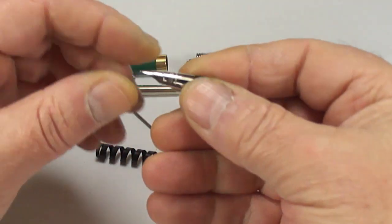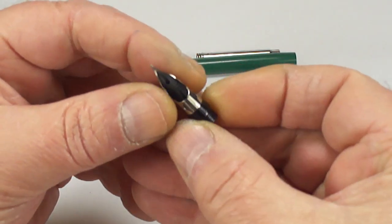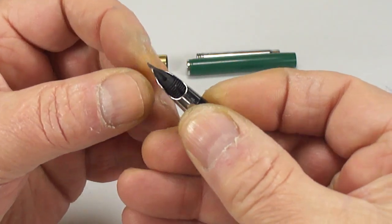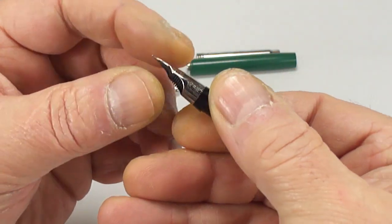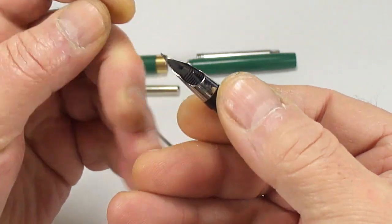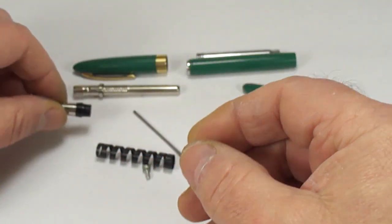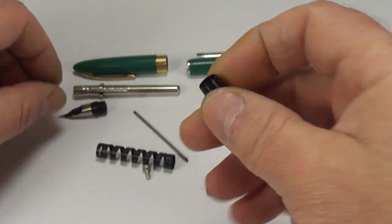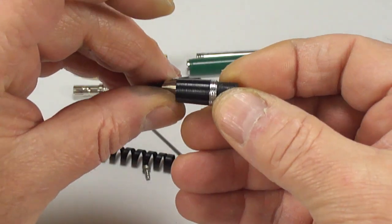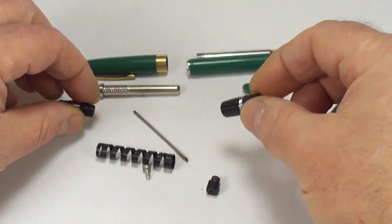To the top of the pen we've got the nib with the feed inside. These nibs actually will unscrew but there's no need to unscrew it if you don't need to. They're quite simple to clean themselves. So there's a nib with the feed. There's the section. Obviously the feed goes inside the section.